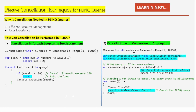Then I have created an instance of `CancellationTokenSource`: `var cancellationTokenSource = new CancellationTokenSource()`. With the help of that object, I am deriving the token: `cancellationTokenSource.Token`, and assigning it to the variable named `cancellationToken`.